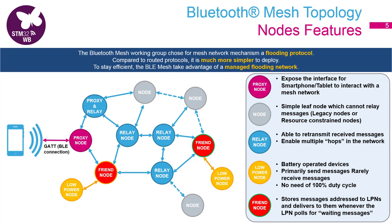The constraint on the relay node is that it's almost always in receive mode, meaning power consumption is quite high. These devices are most usually powered from the mains, and it can be very difficult to have them battery-powered.